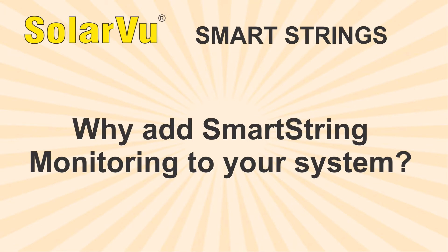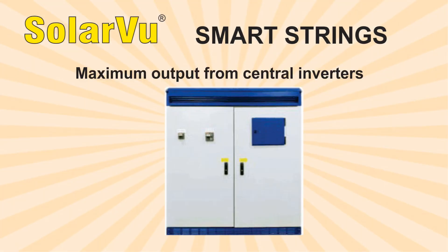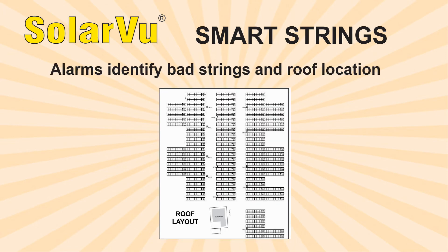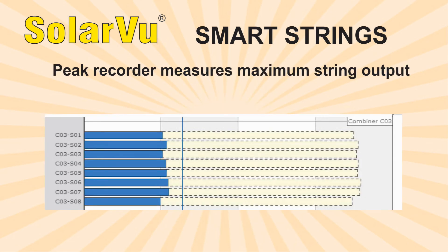Why add the Smart Strings option to your SolarView system? Smart String monitoring is recommended for large 50 to 500 kilowatt systems with central inverters to ensure they are always operating at maximum output. Without it, a low output string could go undetected for a long time resulting in significant lost revenue. SolarView checks every string under all irradiance conditions and sends an alarm if one string is significantly below the others. Operations and maintenance staff can download a roof layout to quickly locate and repair a defective string. Compare all strings to each other to determine if any are underperforming due to aging, soiling or snow coverage.